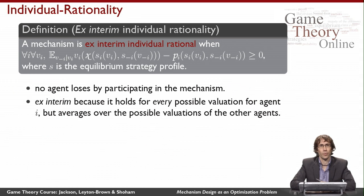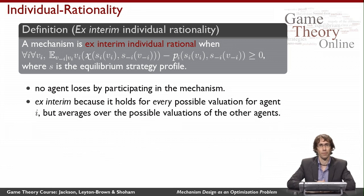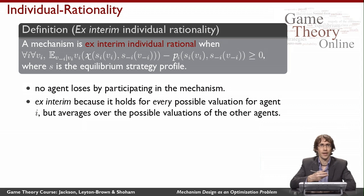Here's yet another constraint: individual rationality. The idea is that I want to encode that agents might have a choice about whether to participate in the mechanism. Formally they don't have a choice — they have to choose some action and payments get imposed on them. But in practice, we want a condition saying agents would have liked to choose to be part of this mechanism: their expected utility for participating is no worse than their expected utility from staying at home, i.e., their expected utility is weakly positive.